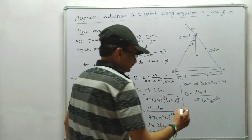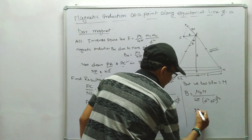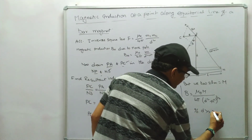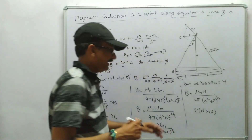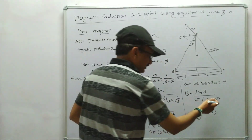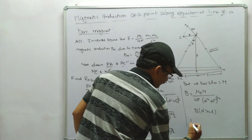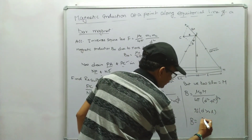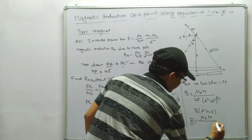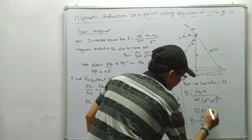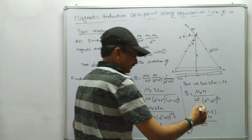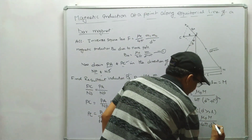If d is very much greater than L — that is, if L is negligible compared to d — then L becomes 0. The equation simplifies to B = (μ₀ × M) / (4π × (d²)^(3/2)), and since (d²)^(3/2) = d³, we get B = (μ₀ × M) / (4π × d³).